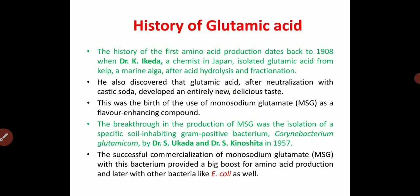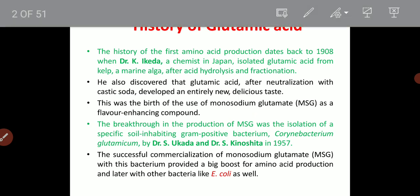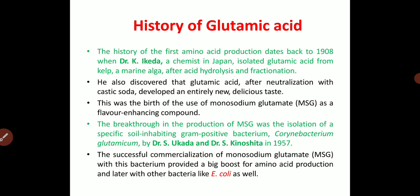Glutamic acid is an important amino acid, commercially used right now. It is produced with a bacterium species called Corynebacterium, and sometimes genetically modified E. coli is also employed. Glutamic acid was originally discovered in the year 1908 by Dr. K. Ikeda from Japan. He isolated monosodium glutamate — that is glutamic acid — from a marine alga. He also discovered that glutamic acid, after neutralization with caustic soda, can produce an entirely delicious taste, containing a molecule called monosodium glutamate.